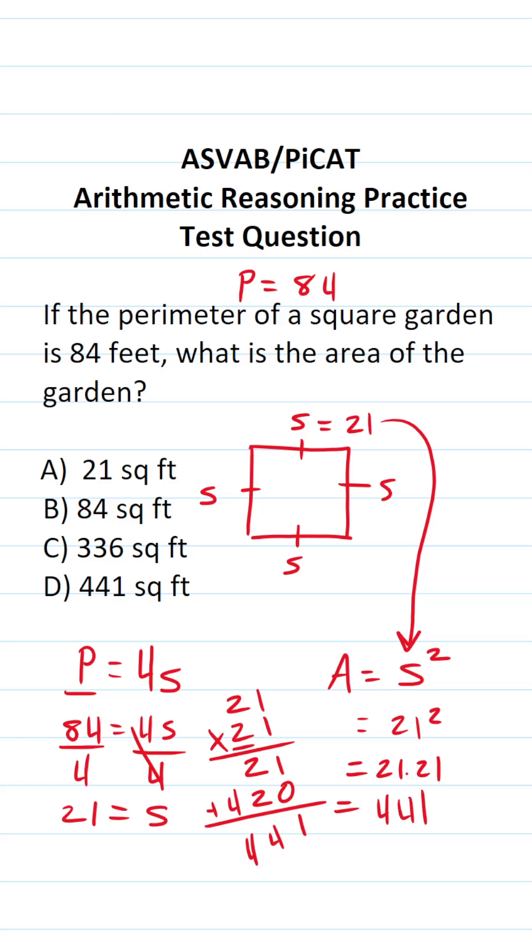In other words, the area of this square garden that has a perimeter of 84 feet is going to be D, 441 square feet.